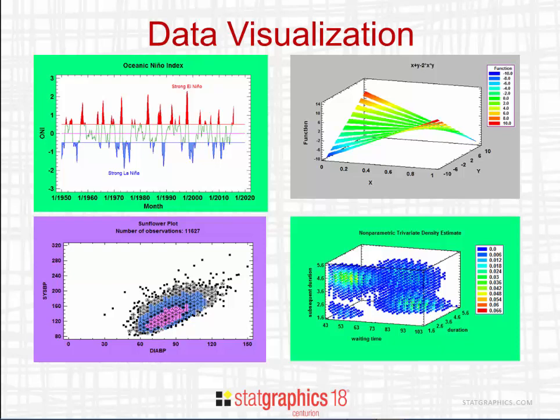Some other new data visualization procedures include the time series baseline plot shown in the upper left. This is used when you have time series with an upper and lower limit — the plot shown here indicates the occurrence of El Niños and La Niñas. The plot in the upper right is a ribbon plot used to display a response surface. The bottom left shows a sunflower plot, which replaces an XY scatter plot when you have lots of data; the number of rays and color of each sunflower indicate the density of observations. Finally, in the bottom right is a trivariate density estimator, showing the distribution of three random variables.